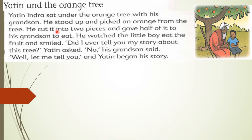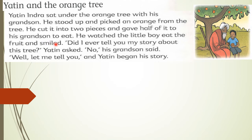He cut the orange into two pieces and gave half of it to his grandson to eat. He watched — راقب — the little boy eat the fruit — يأكل الفاكهة — and smiled — ابتسم. Here, 'He' refers to Yatin.